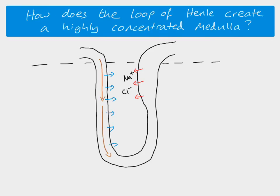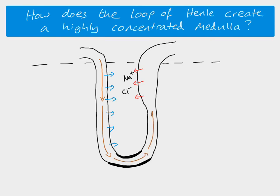As the filtrate moves down, water continues to move out because this whole area has got a lower water potential compared to the filtrate. The bottom hairpin part is impermeable to everything. So what you end up with is actually very concentrated filtrate by the time you get down here, because so much water has been removed. Because it's very concentrated, as soon as it starts moving up through the ascending limb, sodium and chloride ions move out — but this time they move passively. These represent the passive diffusion of sodium and chloride ions, which means the tissue fluid here is becoming very very concentrated.